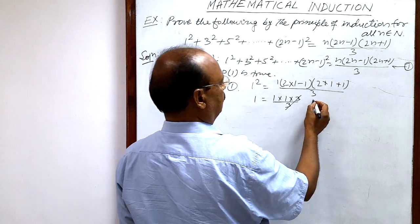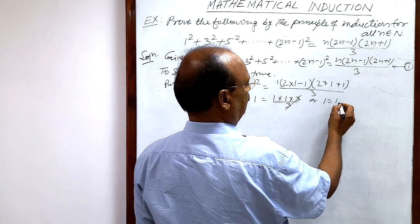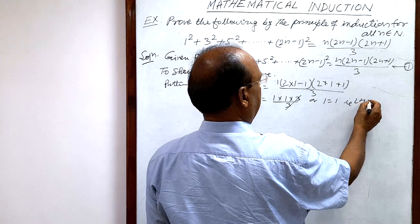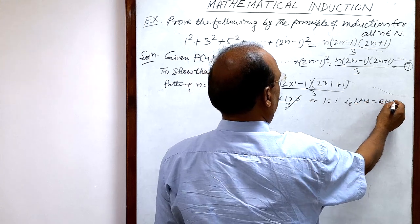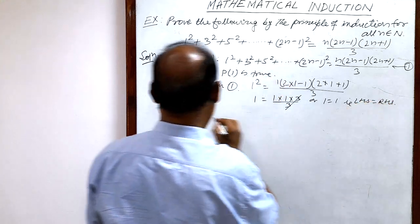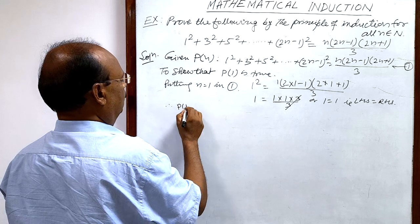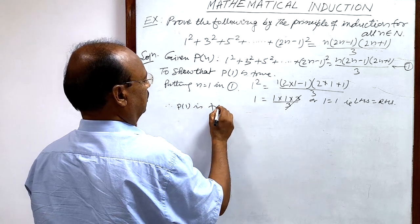Simplifying: 1 = 1 × 1 × 3 / 3. Cancelling, we get 1 = 1. That is LHS = RHS. Therefore P1 is true.